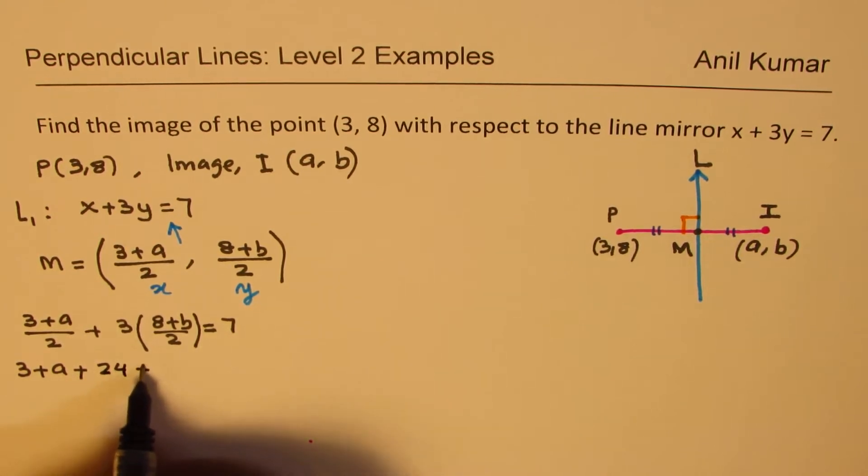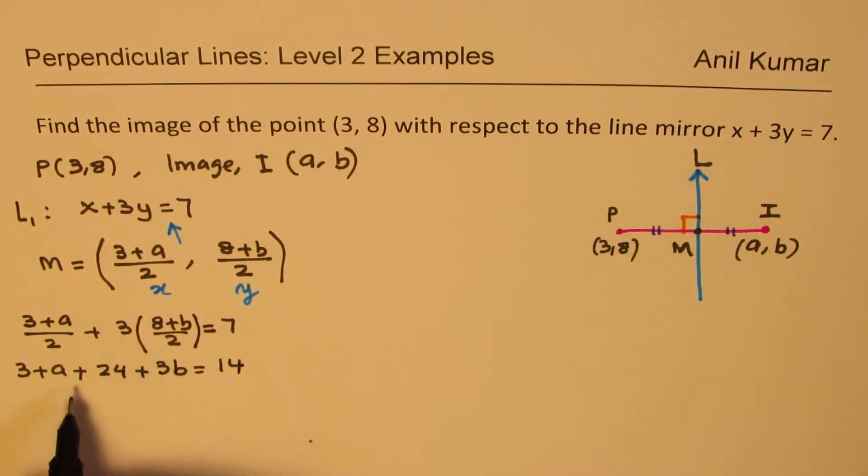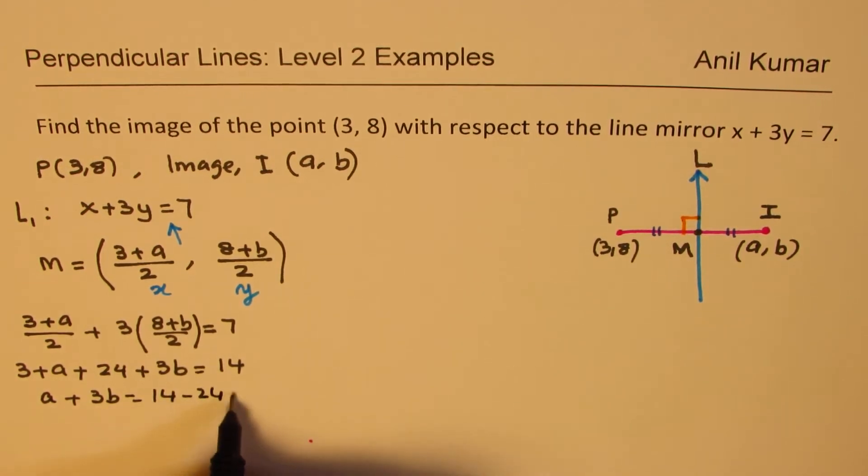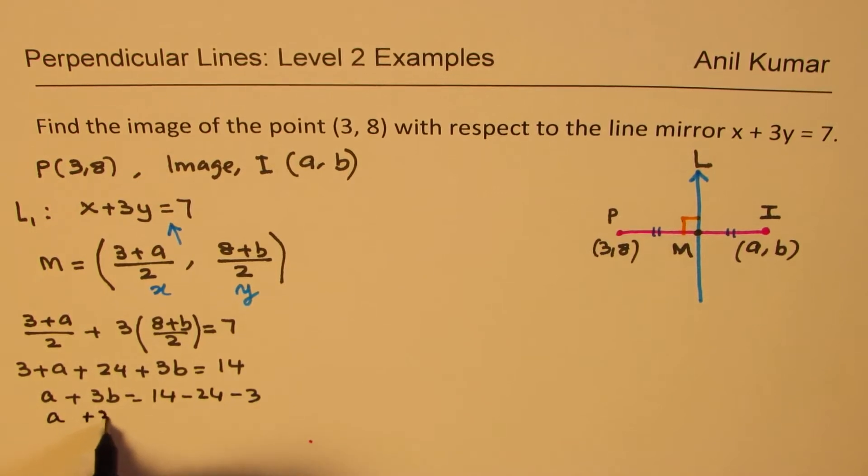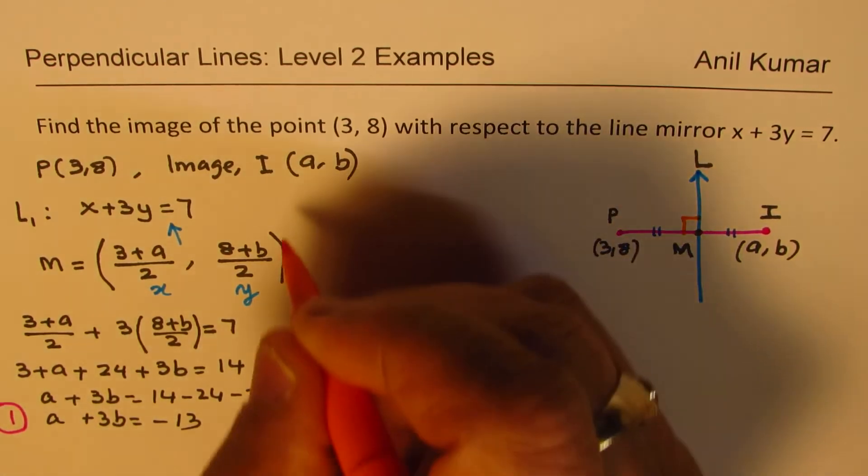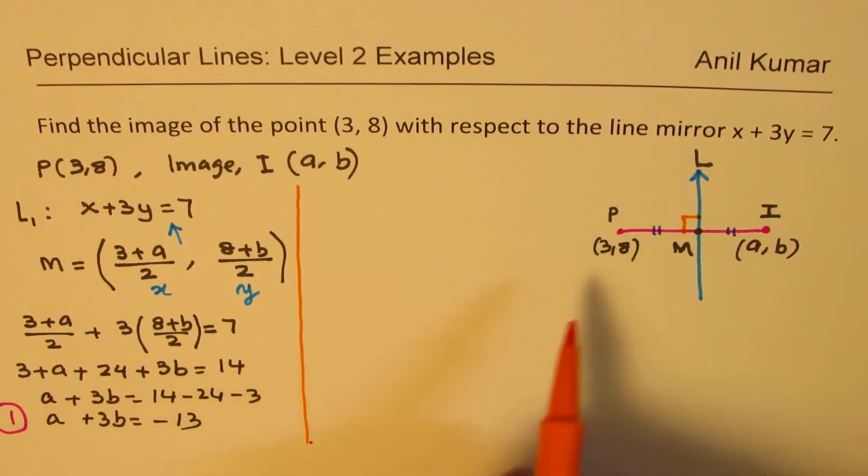So multiplying everything by 2, we get 3 + a, plus 3 times 8, plus 3b, equals to 14. Or, combining and taking these constants on the other side, we get a + 3b equals to 14 minus 24 minus 3, or a + 3b equals to minus 13. So we get one equation, we'll call this as our equation number 1. So we are saying that the midpoint has to be on the line, and therefore, it should satisfy the equation of the line, so we get one equation.